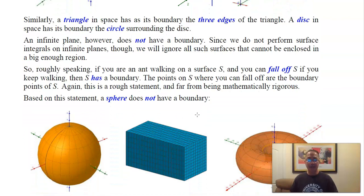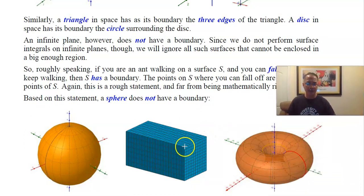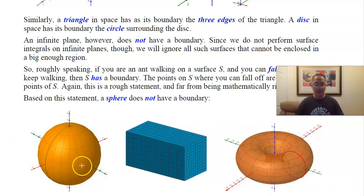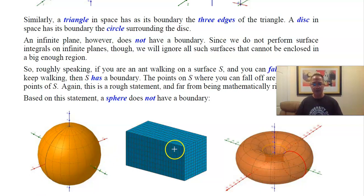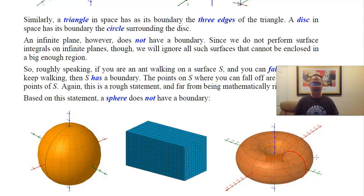What are some examples of surfaces that do not have a boundary? A sphere, a cube or box — it has edges, but there is no boundary. A torus — a donut — also does not have a boundary. It turns out that it's actually quite difficult to mathematically describe what a boundary is supposed to be.